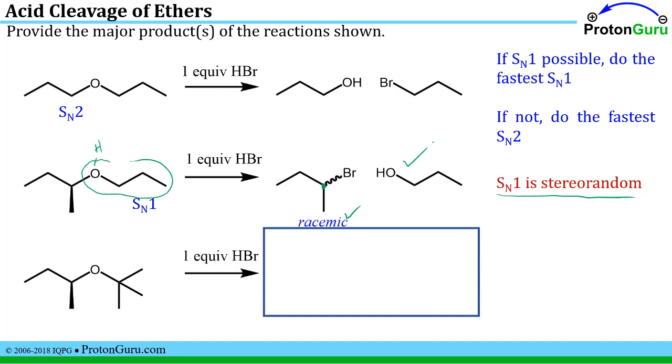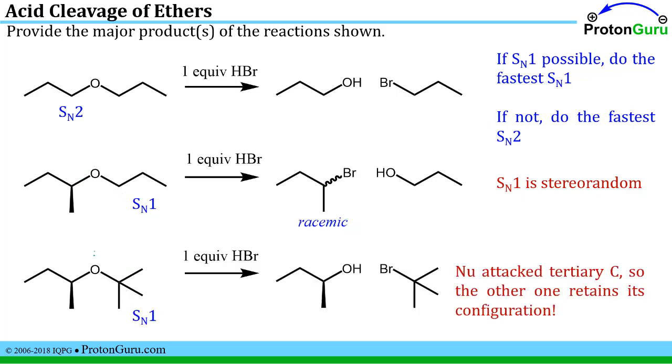Now let's look at the final example on this page. We see a secondary site and a tertiary site. It's possible to do the SN1 reaction on either side. We want to do the fastest one. Remember that a tertiary carbocation will form more quickly than a secondary. So we're going to have the bromide eventually attacking that side once it comes off as a carbocation. Mechanistically, we'd first protonate this. It would break off to form this alcohol. Then we would have this tertiary carbocation from this side and the bromide would coordinate to that to give you this alkyl bromide. Notice that since the nucleophile attacked the tertiary carbon, the other side, this carbon didn't change its bonding. It retained its configuration.